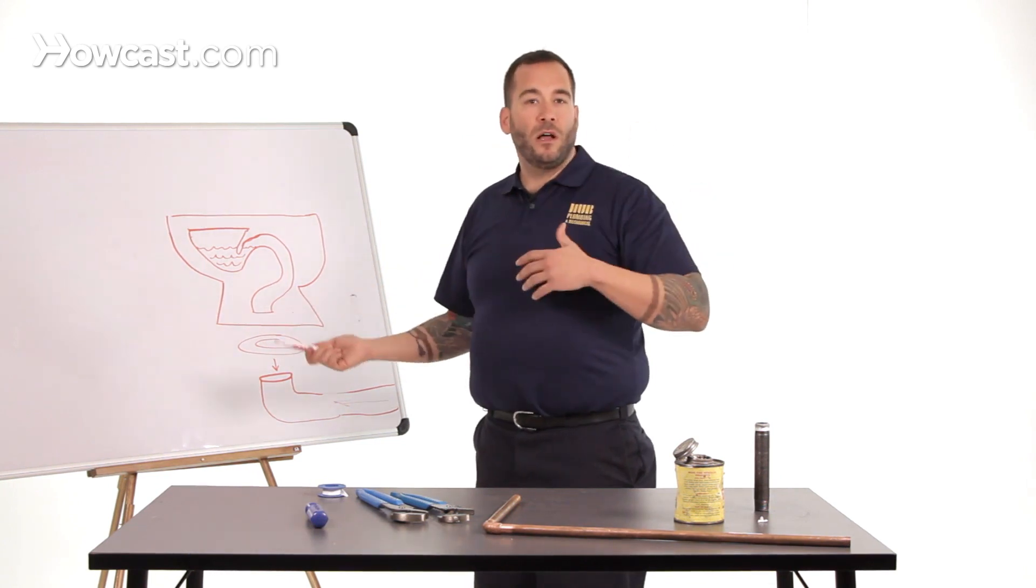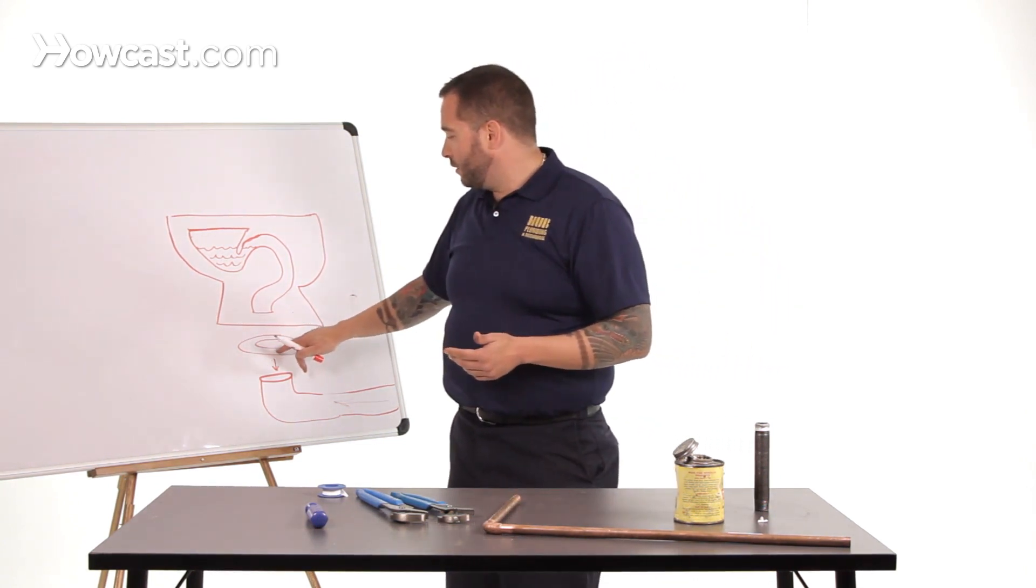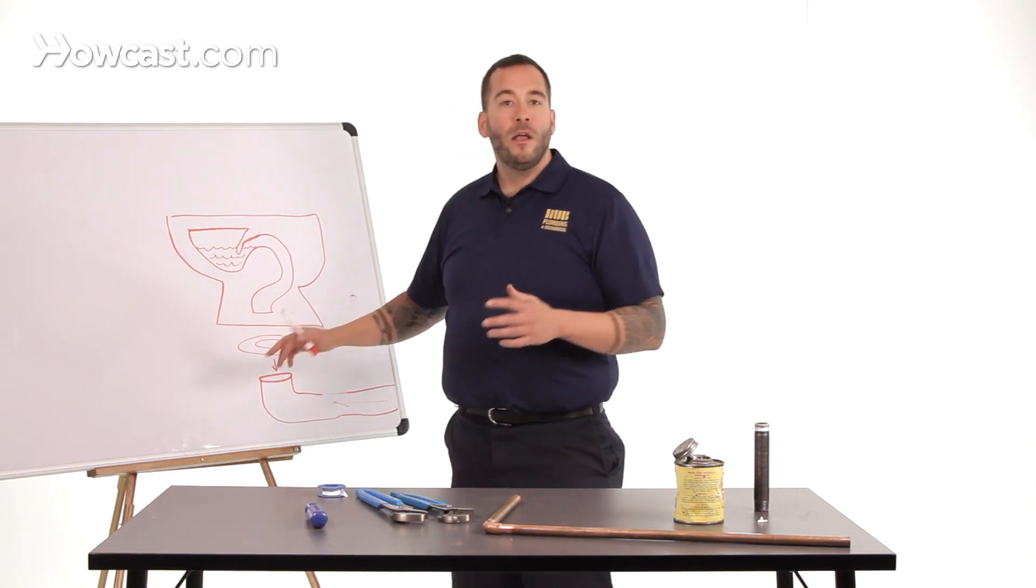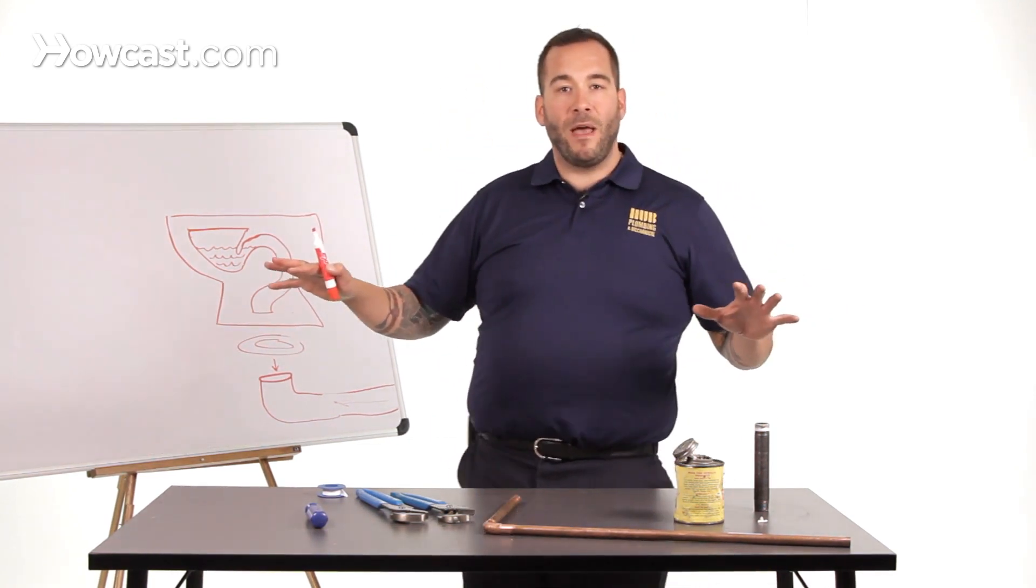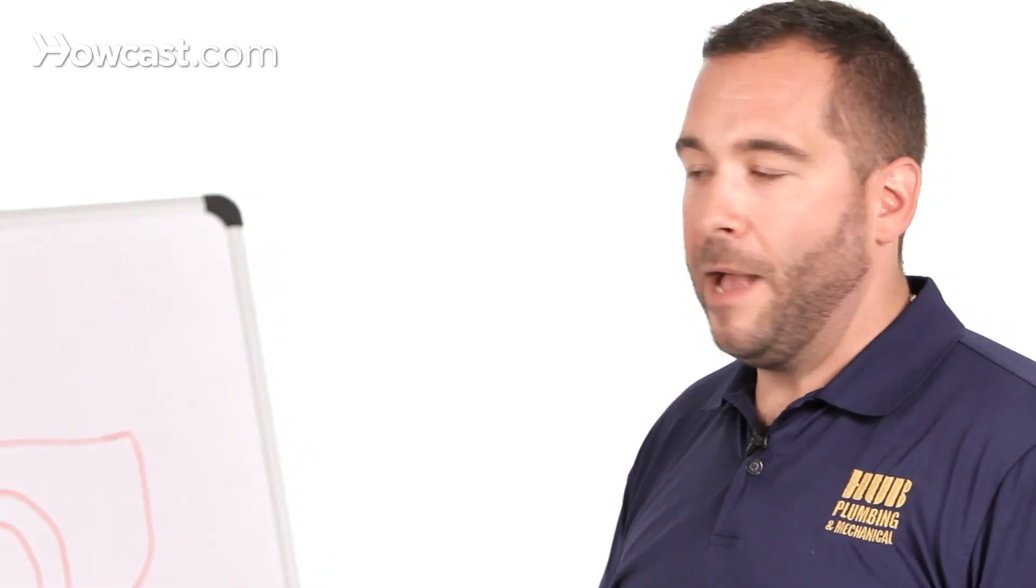And we fix the clog, and the seal is not replaced. So now instead of a nice, clean wax ring around here blocking all the sewer gas from coming back in, we've got a compromised wax ring that is not blocking sewer gas. So the bad smell that you're getting from a basement toilet is most likely sewer gas.